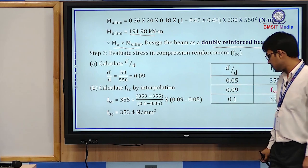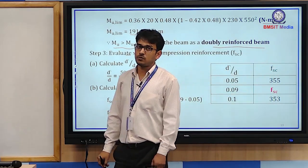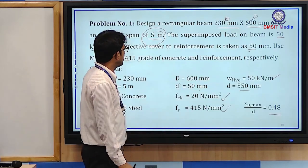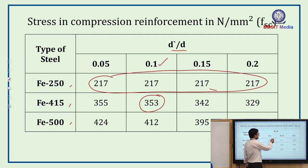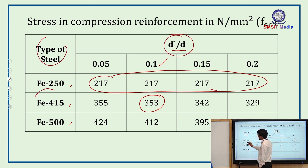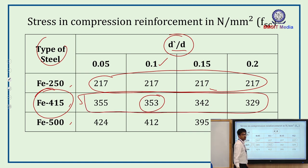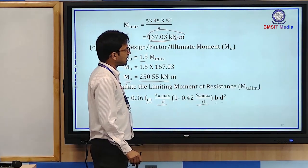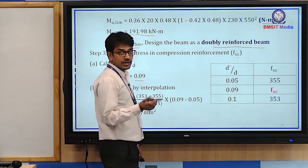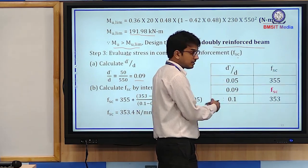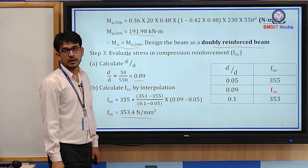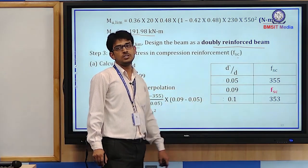Step 3: Calculate fsc (stress in compression reinforcement) for Fe415. First calculate d'/d = 50/550 = 0.09. From the IS code table for Fe415, this value falls between 0.05 and 0.1. By interpolation between the corresponding fsc values (355 and 353), we get fsc = 353.4 N/mm².